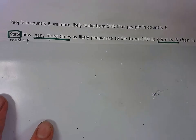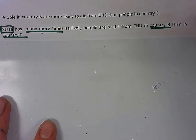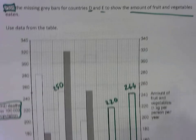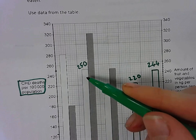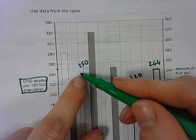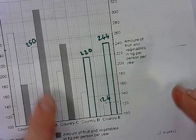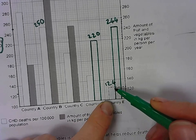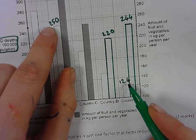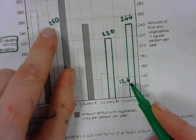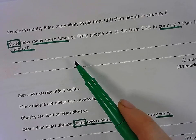Question 2F: state how many times more likely people are to die from coronary heart disease in B than E. For this one, you need to read off the values of deaths for B and E. For B, it's the white bar, which goes up to halfway between 240 and 260, so 250. For E, the white bar goes up to just one box above 120, which is 124, because each small box is 4. 250 is about 2 times 124 — just over 2 times, but 2 times is fine — so the answer is 2 times more likely.